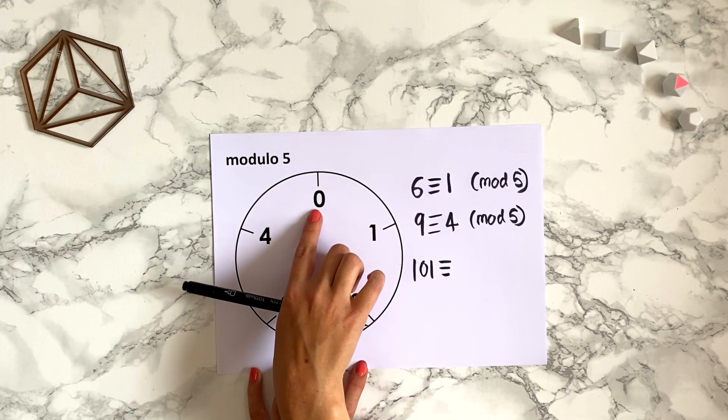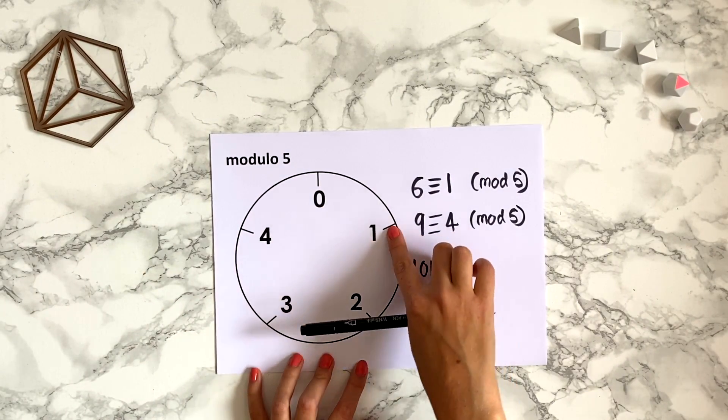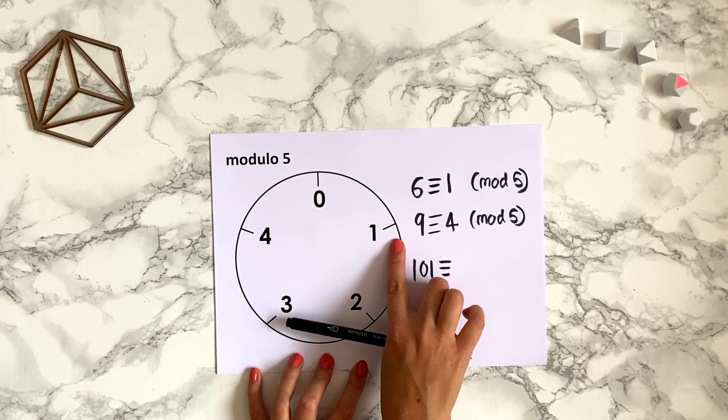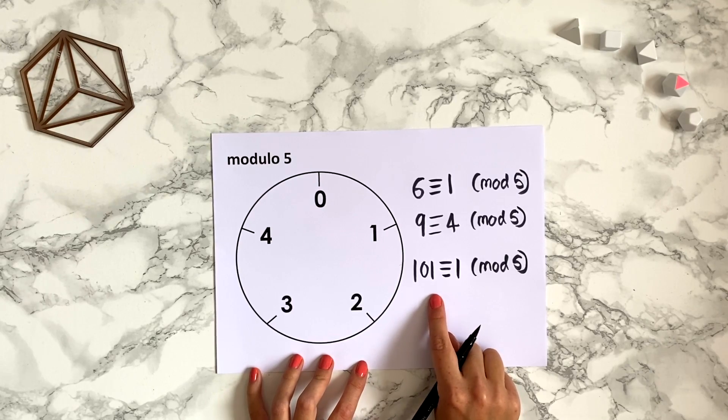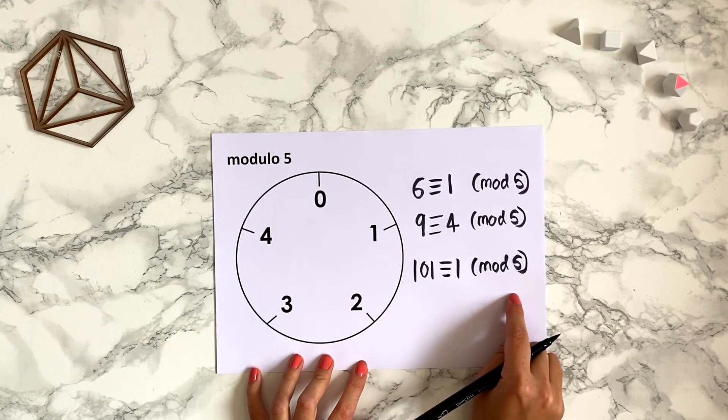To get to 101 you just jump over 1. So 101 would be congruent to 1 modulo 5. Again you can also see this by thinking about the remainder when you divide 101 by 5.